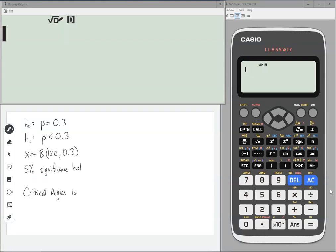In this video, I'm going to show you how to find the critical region for this hypothesis test. So n is 120, p is 0.3. The alternative is less than 0.3, and we're at a 5% significance level.